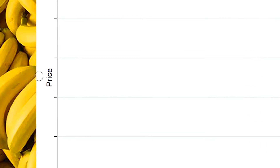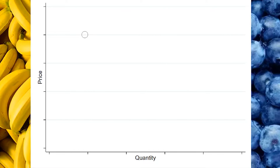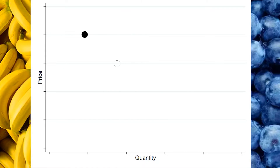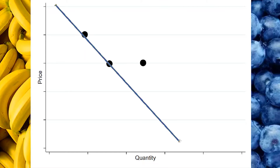They both start at the same price and the same quantity demanded, so they're going to be represented by this single point right here. They both have the same price drop, so we know both of them are going to be around this line right here. But the quantity for bananas went higher than the quantity for blueberries — we represent that dot for bananas over here and the dot for blueberries over here — and then we draw a line connecting these points. We can see that the slope for blueberries is steeper than the slope for bananas. You can usually recognize the elasticity of demand through the slope of that demand curve: the steeper that curve, the less elastic the demand is.